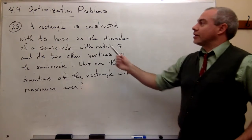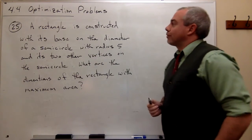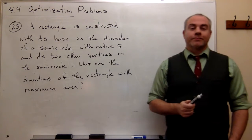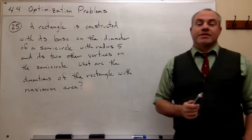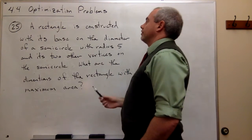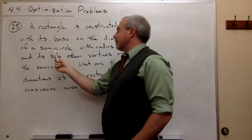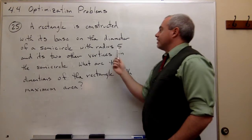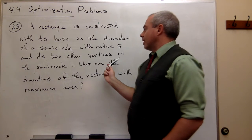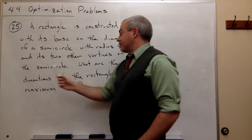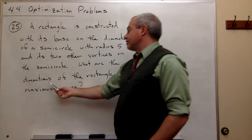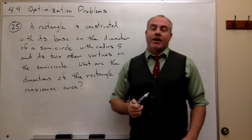Welcome back. Today we're going to talk about problem 25, which is an optimization problem. Let's just read the problem and see what we're dealing with here. We've got a rectangle that is constructed with its base on the diameter of a semicircle with radius 5, and the other two vertices are on the semicircle itself. What are the dimensions of the rectangle with maximum area?